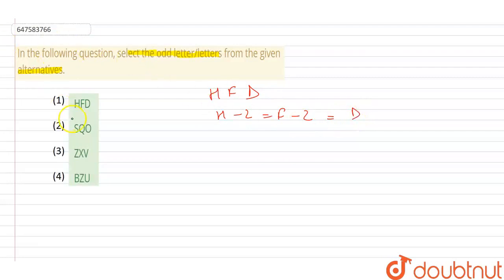Now guys, the second word is SQO. S, Q, O. S, if we do minus 2, we will get Q. Q, if we do minus 2, we will get O.